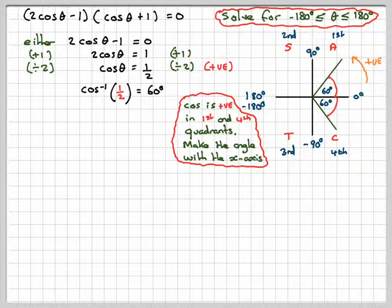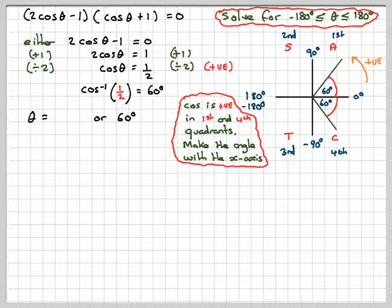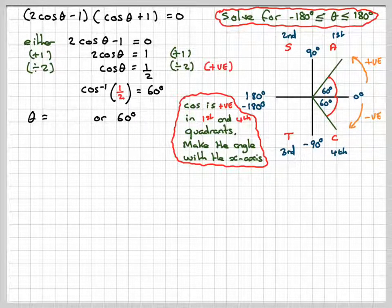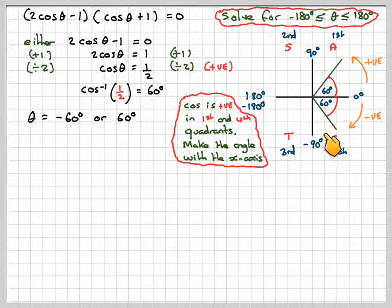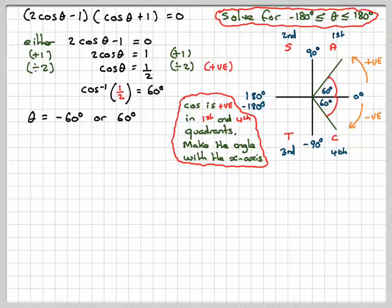So we get two answers. Going this way is positive so we're going to get theta could be 60, and if we go the other way we're going to have one which is minus 60, because remember that's negative angles, this is positive. So it's anti-clockwise for positive and clockwise for negative angles.